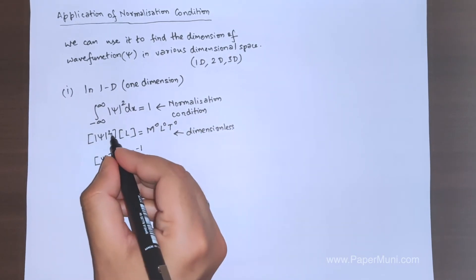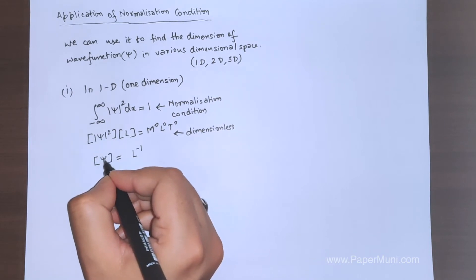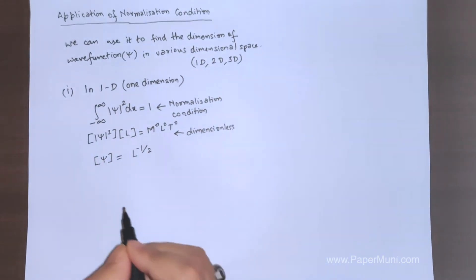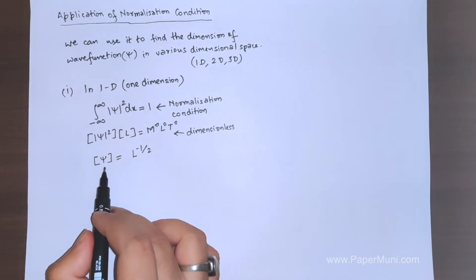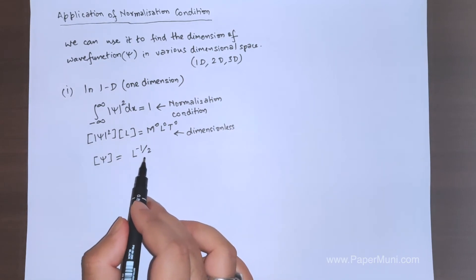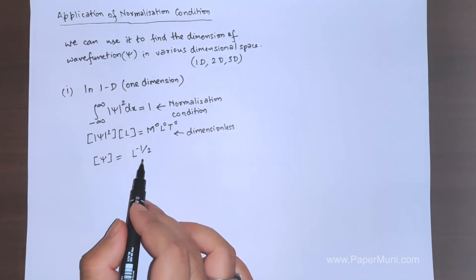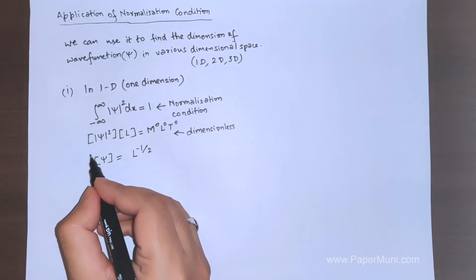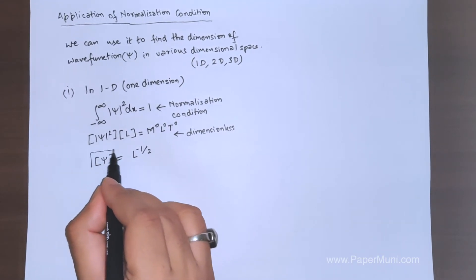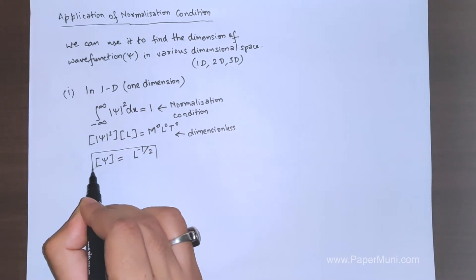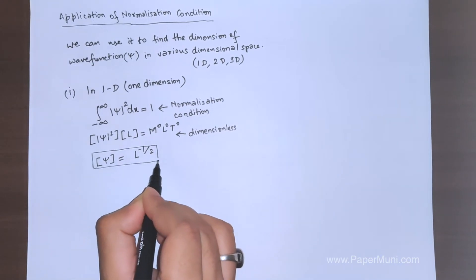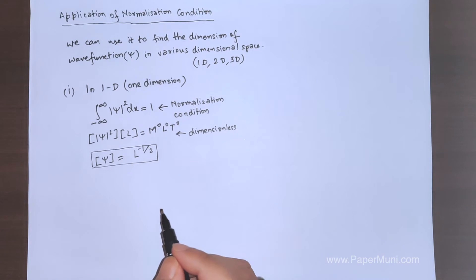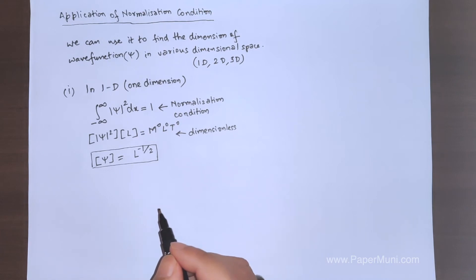If we rearrange, |ψ|² has dimension L^(-1), so taking the square root, ψ has dimension L^(-1/2). In 1D, the wave function has dimension L^(-1/2). You don't need to memorize this — you can always derive it from the normalization condition.